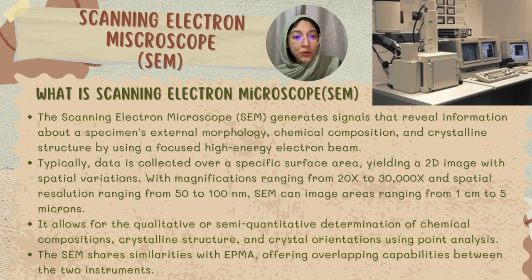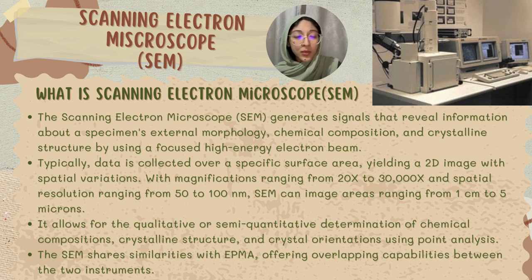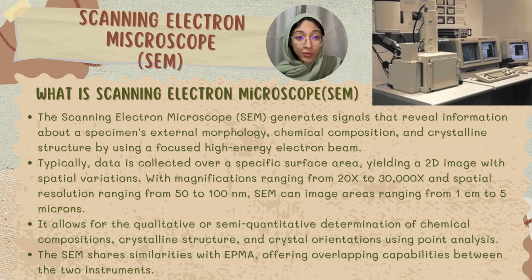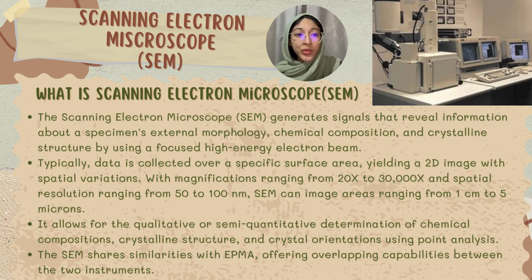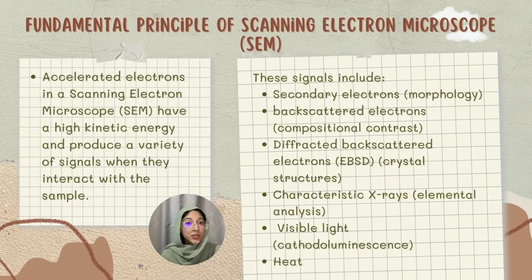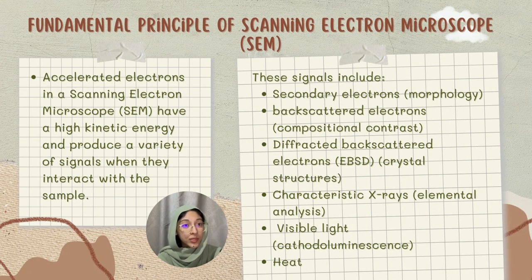With magnifications ranging from 20 to 30,000 times and spatial resolution ranging from 50 to 100 nanometers, SEM can image areas ranging from one centimeter to five microns. It allows for the qualitative or semi-quantitative determination of chemical compositions, crystal structure, and crystal orientation using point analysis. The SEM shares similarities with EPMA, offering overlapping capabilities between the two instruments.